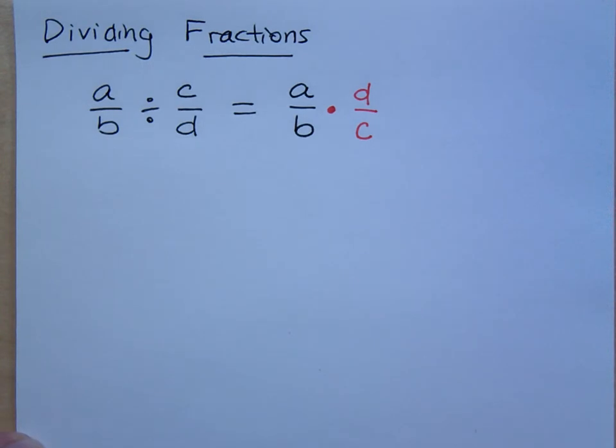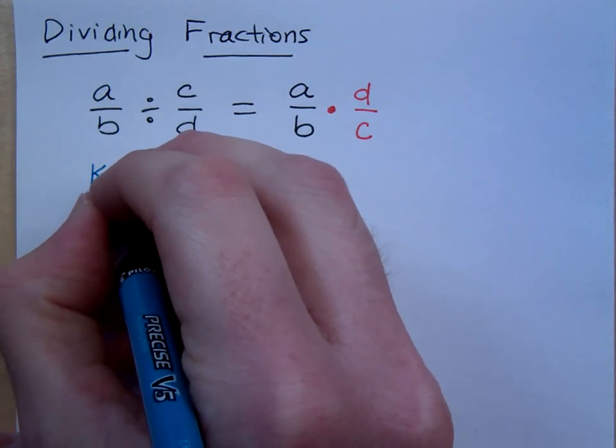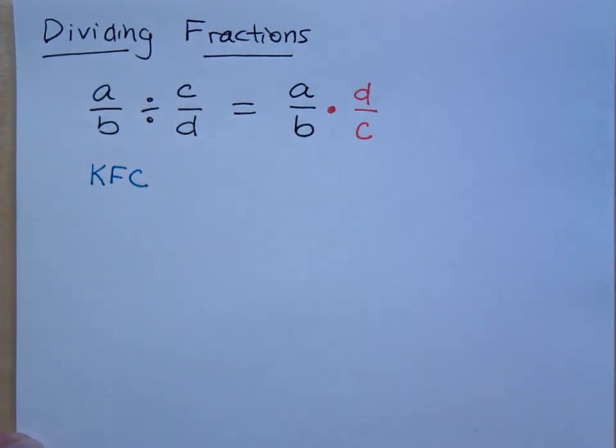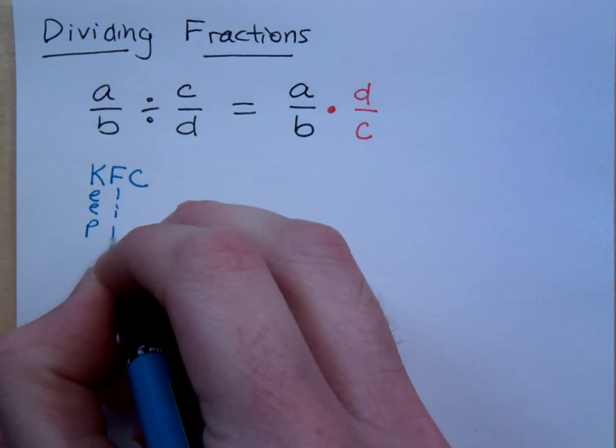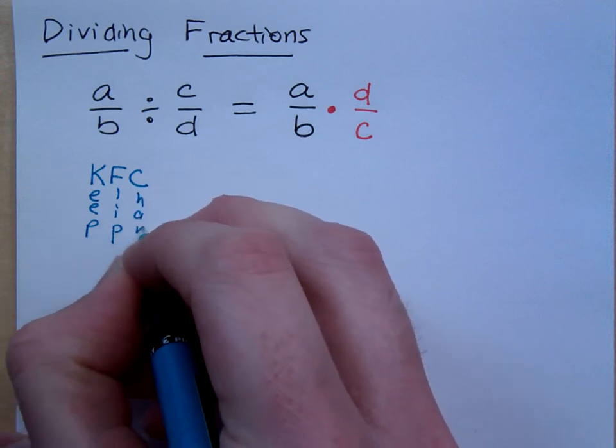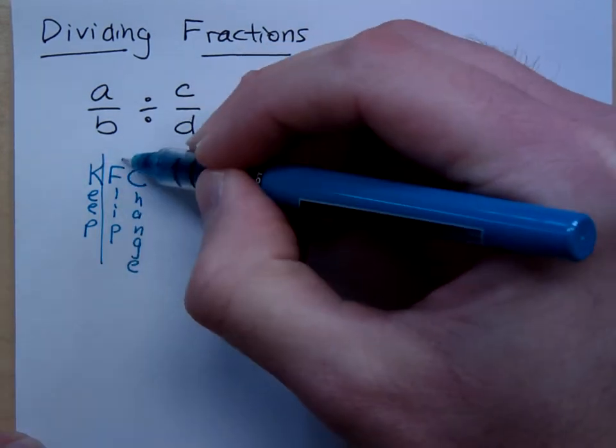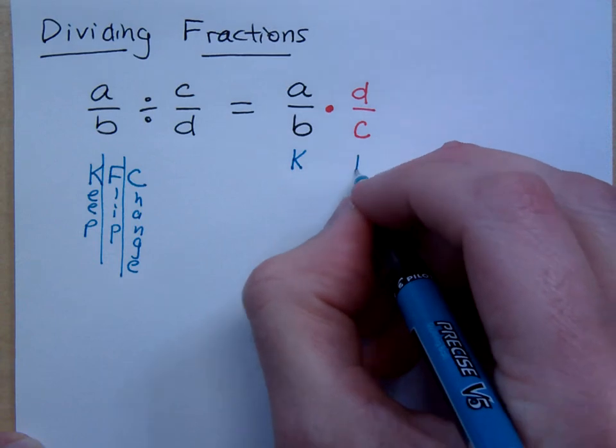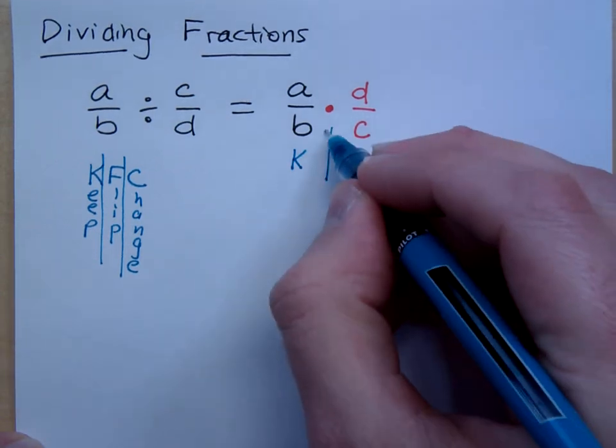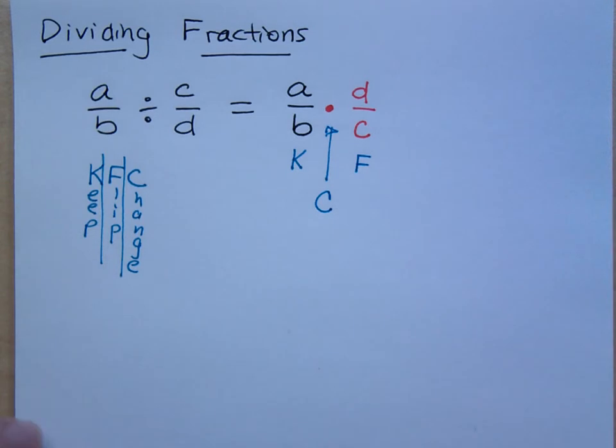Now, a while back, a student told me something about KFC. I was kind of excited because, you know, I like fried chicken. Don't we all? And what this means is, you keep, you flip, and then you change. So they're saying that you keep the first fraction exactly the way you see it, you flip the second fraction, and then you change it from division to multiplication. If that helps you, great. If it doesn't, just ignore this part of the video. I figure everything helps, right?